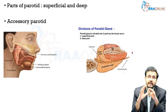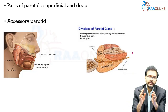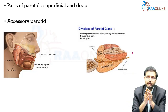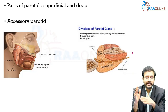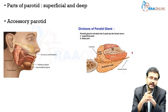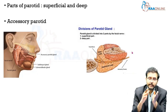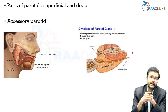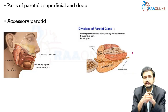The parotid gland has a superficial and a deep layer. This demarcation of the parotid into a superficial and a deep layer is based on the facial venous plane of Patey, which mainly has the facial nerve in it. The deep and superficial parts are very important because of their relation to the adjacent structures.